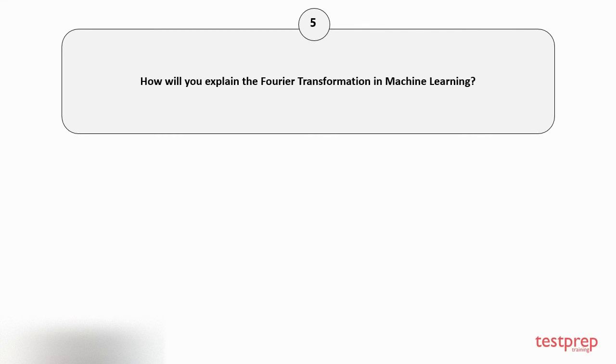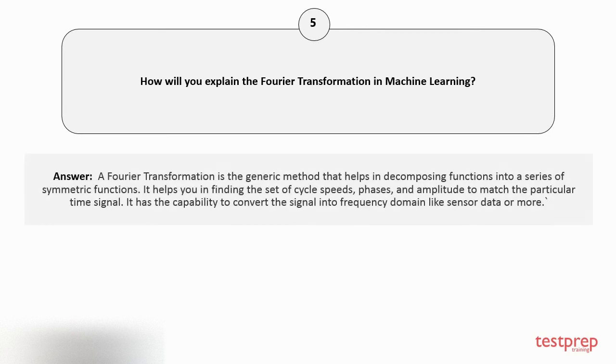Question number five: How will you explain the Fourier transformation in machine learning? A Fourier transformation is the generic method that helps in decomposing functions into a series of symmetric functions. It helps you in finding the set of cycle speeds, phases, and amplitude to match the particular time signal. It has the capability to convert the signal into frequency domain like sensor data or more.